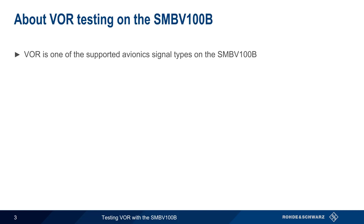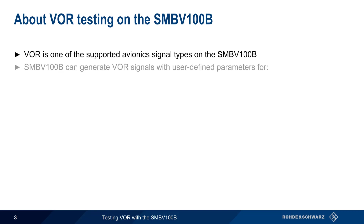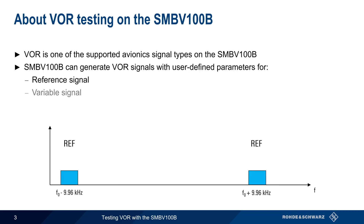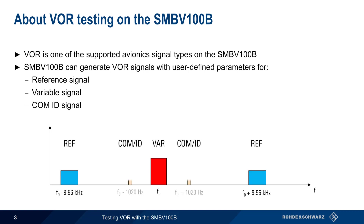VOR is one of the supported avionic signal types on the SMBV100B. The SMBV can generate VOR signals with user-definable parameters for the three components of a VOR signal: namely, the reference signal, the variable signal, and the COMID signal.